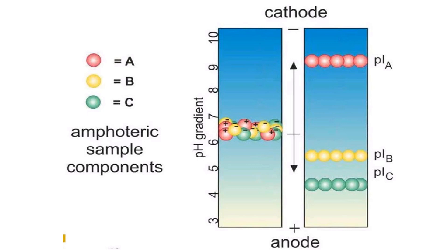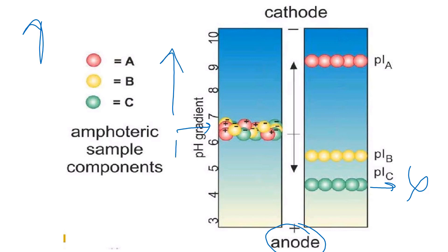Similarly, proteins that are initially at pH regions above the isoelectric point are negatively charged, so these proteins tend to move towards the anode, which is the positive end. They also reach a point where the pH matches the PI — there is no net charge on the protein — it reaches the zwitterion form and acquires a fixed position. This allows the separation of the proteins. Proteins are loaded in the center so that they can move to either end, allowing proper separation of both types.